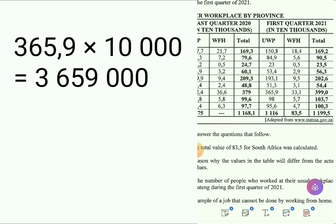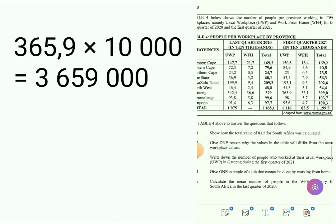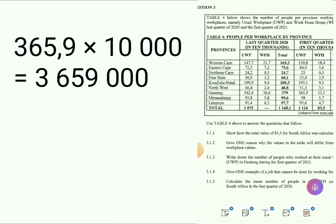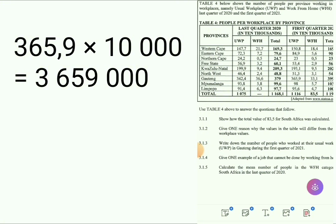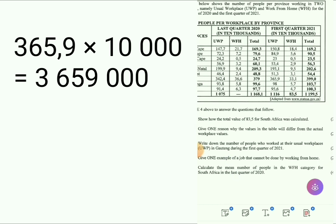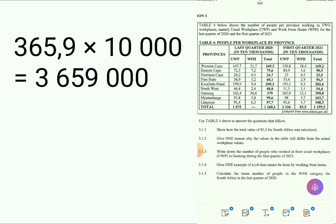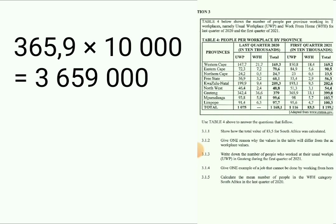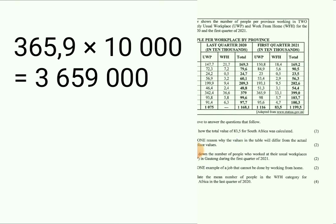For those asking where we get 365.9 — re-read the question. It says 'the number of people who worked at their Usual Workplace (UWP) in Gauteng during the first quarter of 2021.' Find Gauteng in the table — it's the seventh province — go to the first quarter of 2021 under UWP, and you find 365.9.